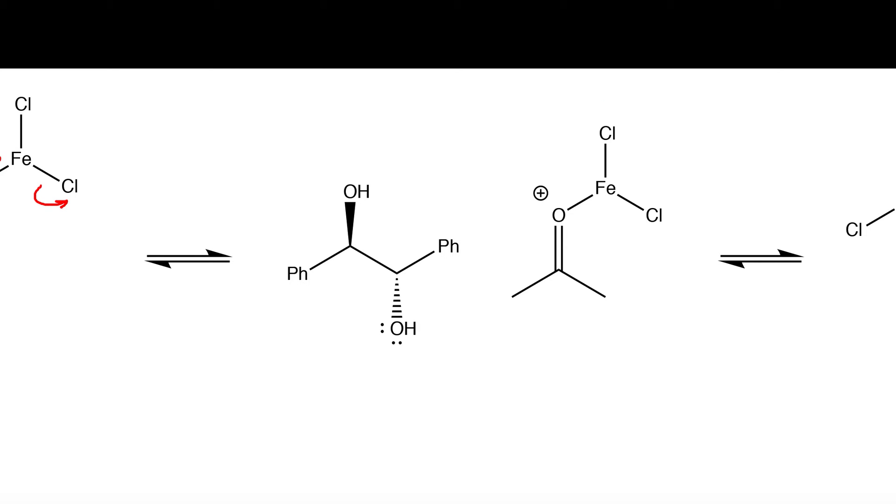Next we take the meso stereoisomer of hydrobenzoin and we react it with the intermediate. So the lone pairs on the hydroxide will go and attack the carbonyl carbon right here. The pi bond breaks and the electrons are placed onto the oxygen.